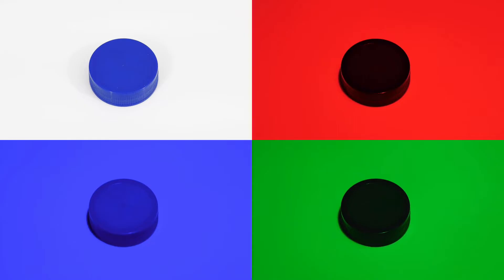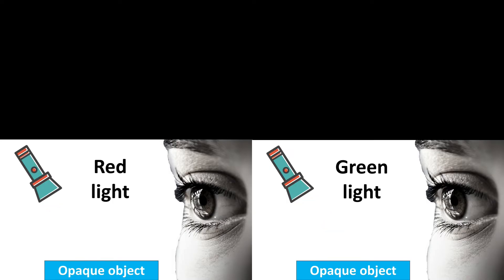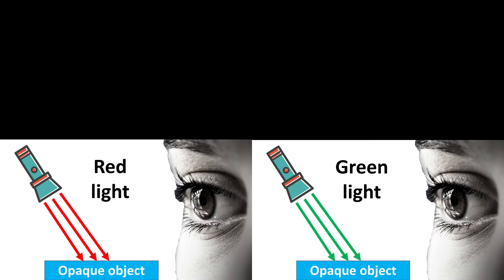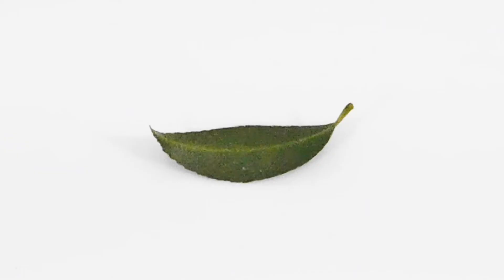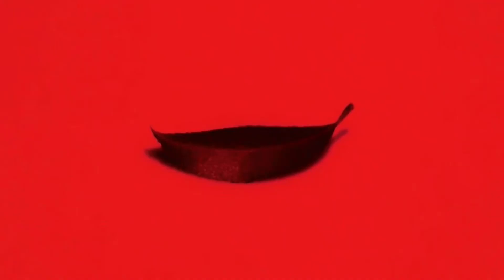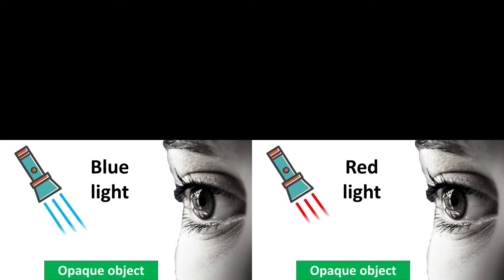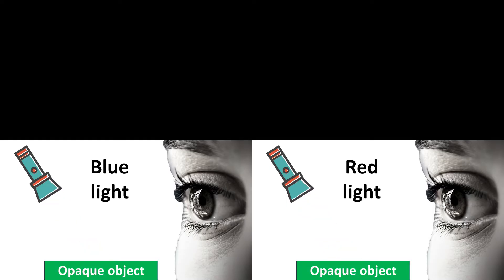For example, this blue lid looks almost black under green light and under red light. But under white light and blue light, the lid looks blue. That's because a blue object reflects blue light, but a blue object absorbs other colors of light such as red and green. Likewise, this green leaf looks almost black under blue light and under red light. But under white light and green light, the leaf looks green. That's because a green object reflects green light, but a green object absorbs other colors of light, such as blue light and red light.